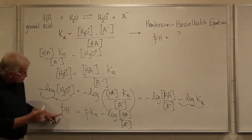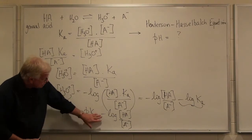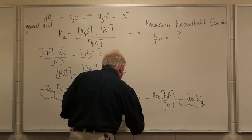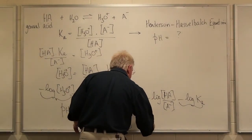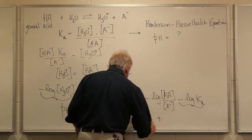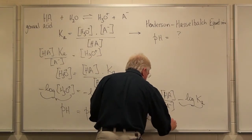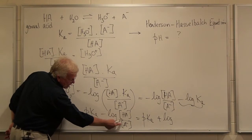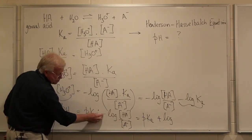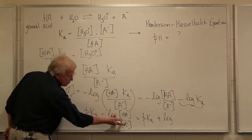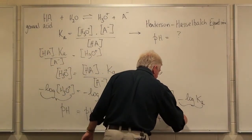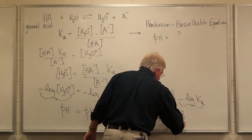Now, the Henderson-Hasselbalch equation usually is written with pKa plus something. So we can rewrite that as pKa plus the log of, now if it's minus the log of that over that, when you turn this into a plus log term, we've got to flip those two round, so that becomes [A-] over [HA].